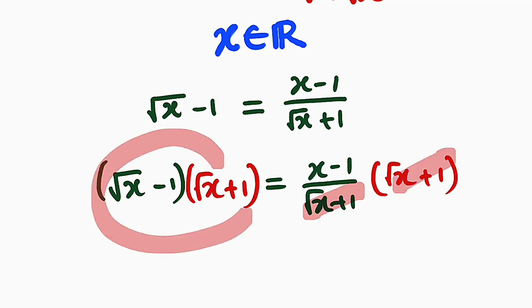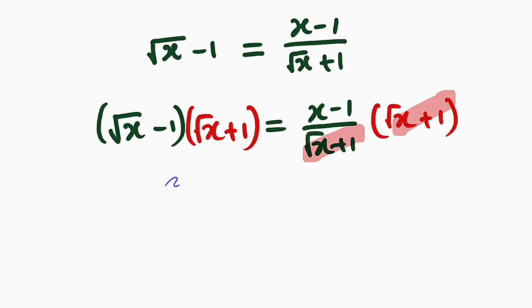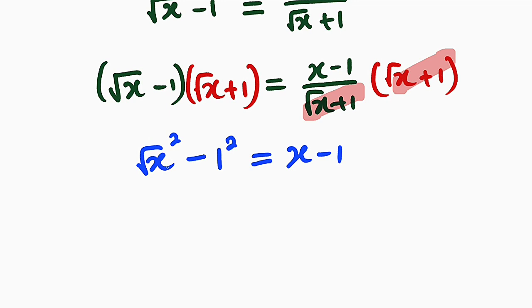And if you observe, this is nothing but difference of two squares. You take the first term, you square that, we have square root of x squared. You subtract, take the second term and square that as well. This is equal to the right hand side. We only have x minus 1.